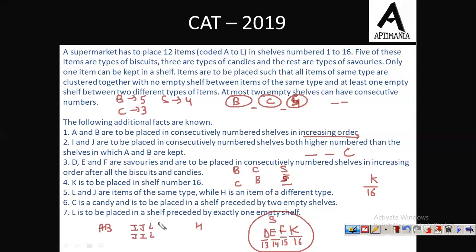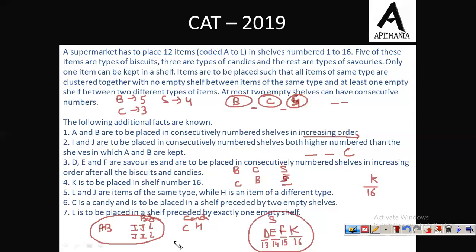If C, I, J, and L were all combined as candies, there must be four candies — but the number of candies is only three. So I, J, and L are not candies; that means they are biscuits. The candies would be C and H — only two. Since A and B are the same type and we have five biscuits, A, B, I, J, L must be the five biscuits. The remaining item G, along with C and H, must be the three candies.